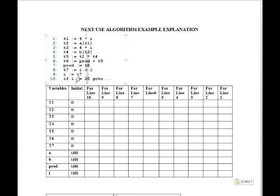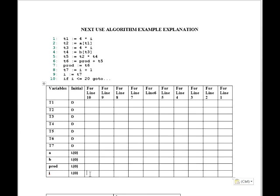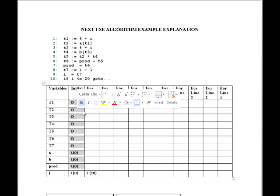Now go to line number 10. At line number 10, we see: if I is less than or equal to 20, then go to that line. So I is giving a decision each and every time, meaning I is live. So we put L10 — live at line number 10. The other variables will remain the same as the initial step values for line number 10.